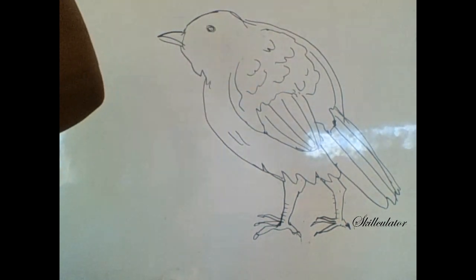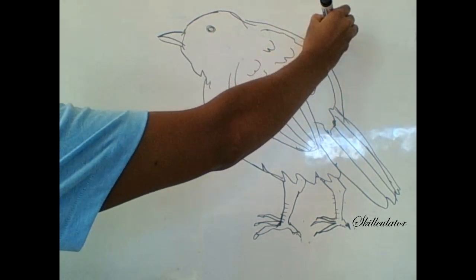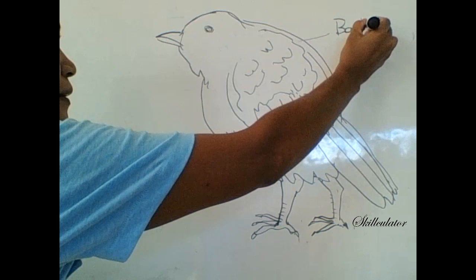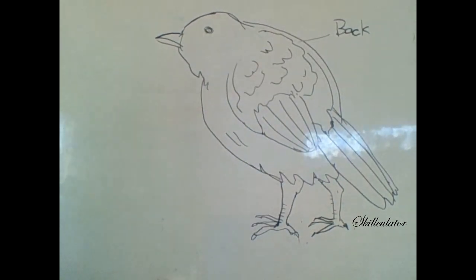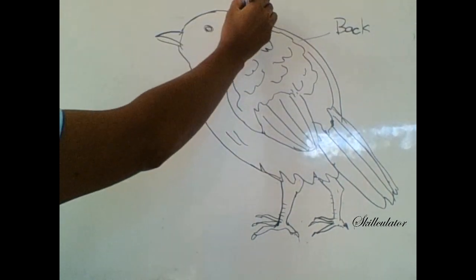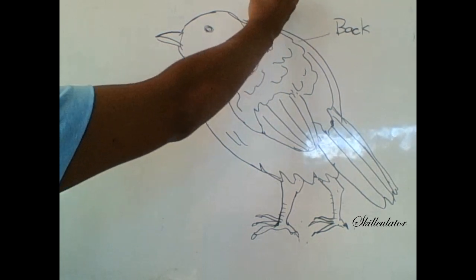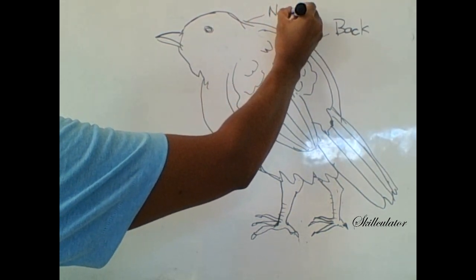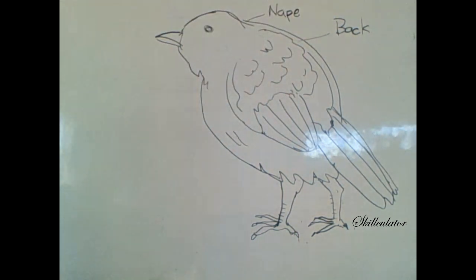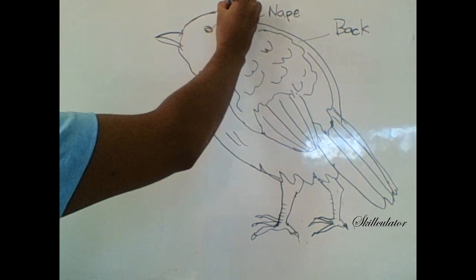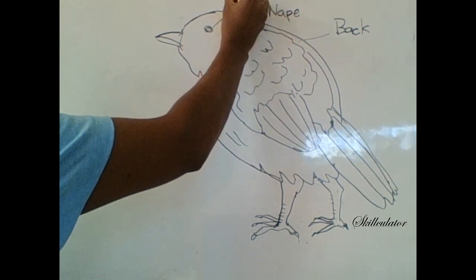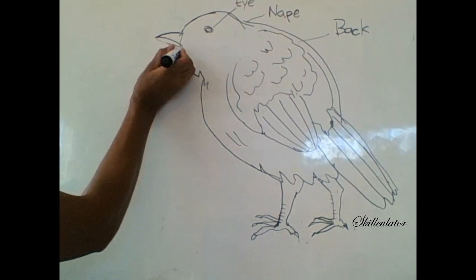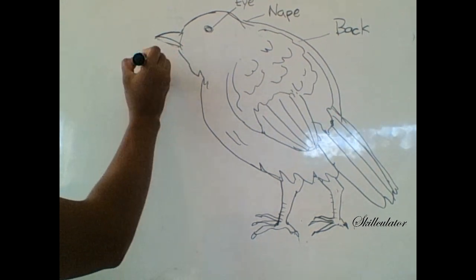So that's the back of the bird. This is the back of the bird. Birds either have a beak or a bill, this one here is a beak.